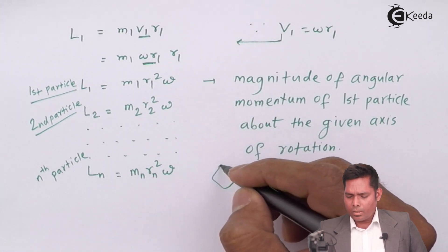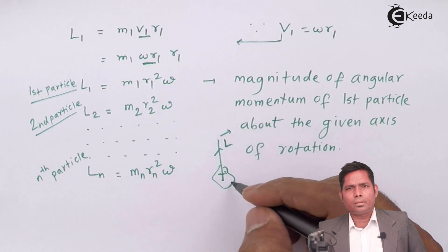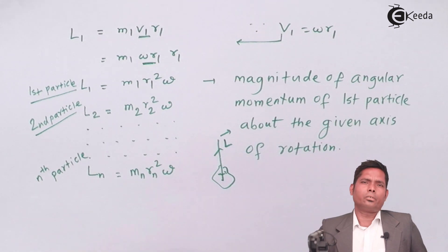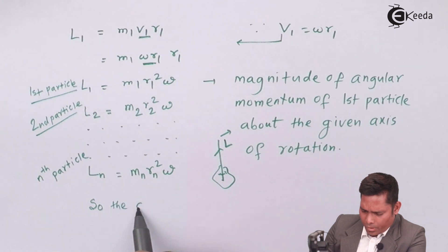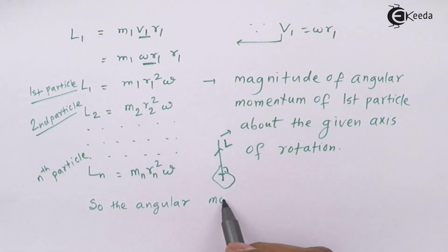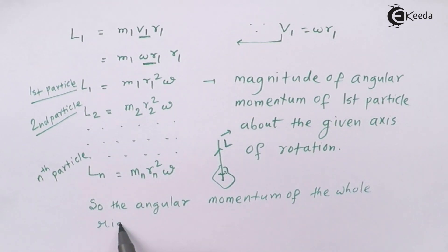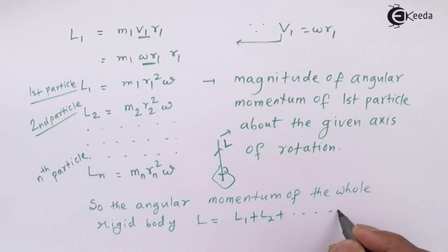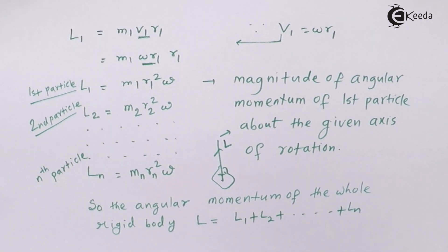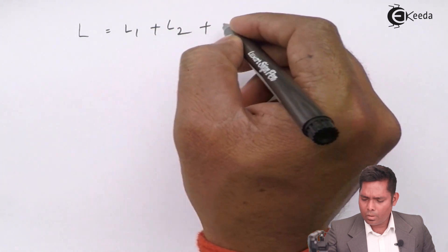Since the direction of the rotating body is already considered, all angular momentum vectors point in the same direction for each particle. Because all vectors are in the same direction, you can add them algebraically. So the angular momentum of the whole rigid body L equals L1 plus L2 up to Ln.